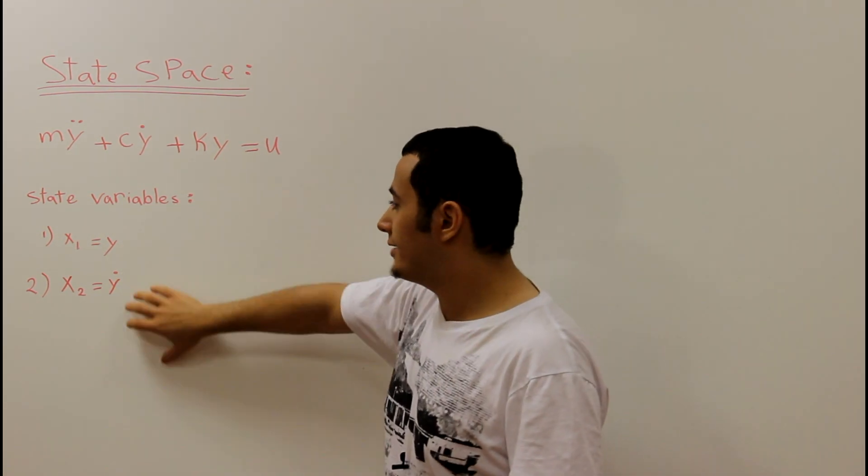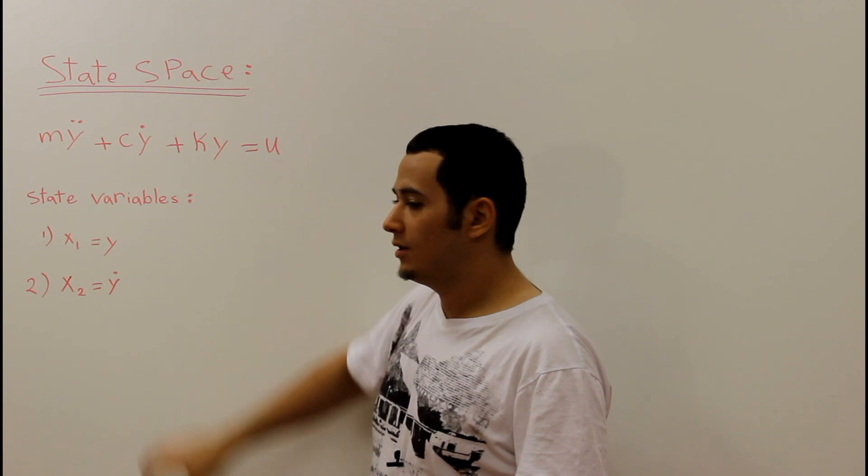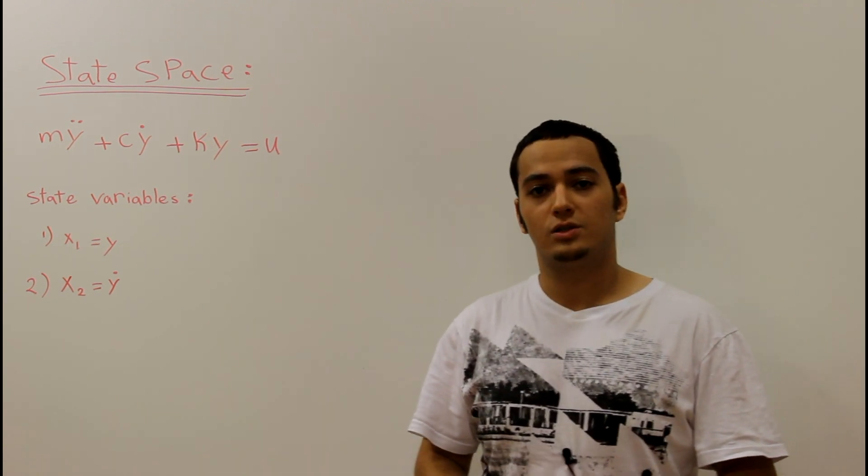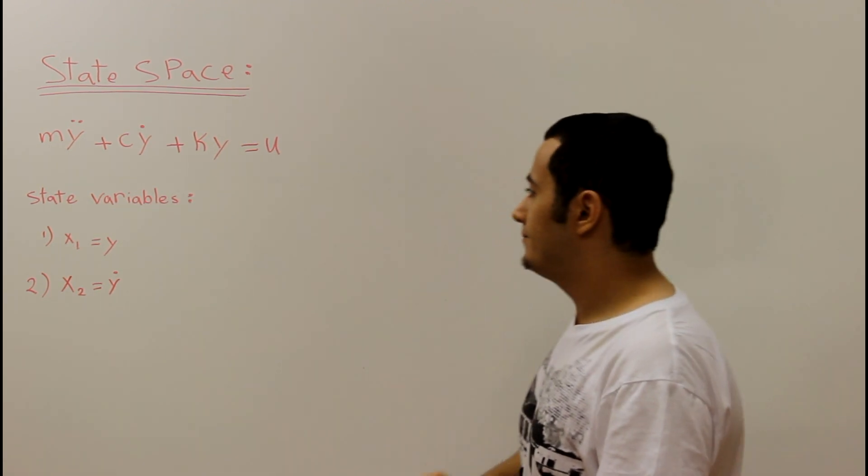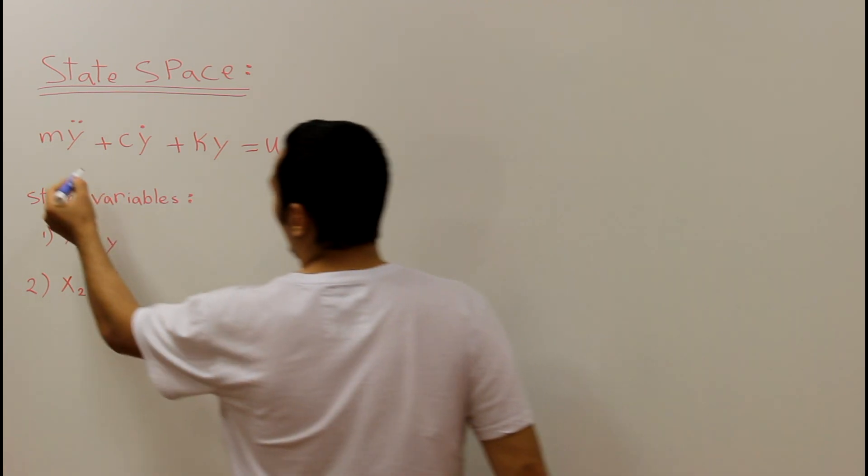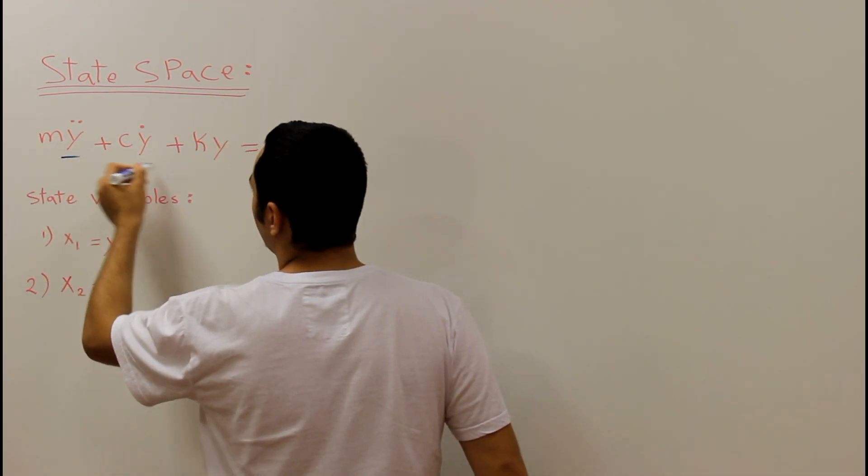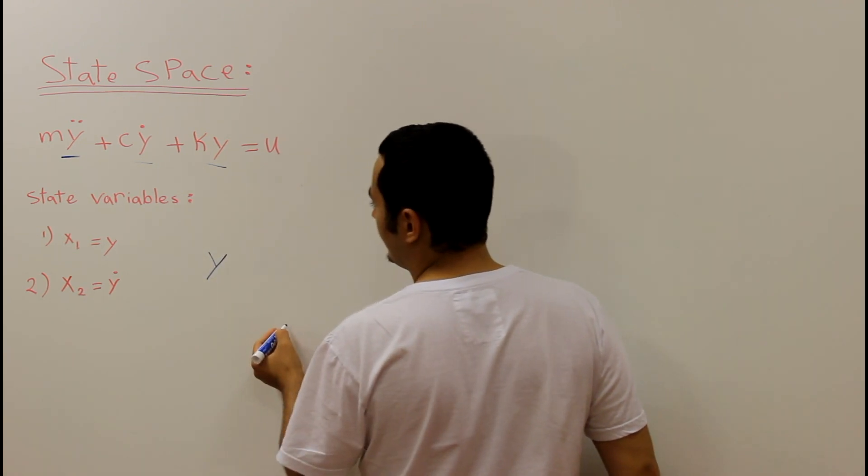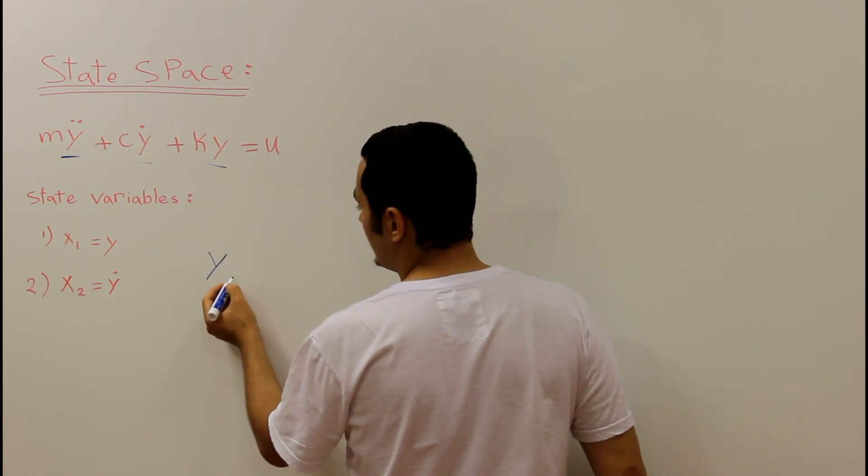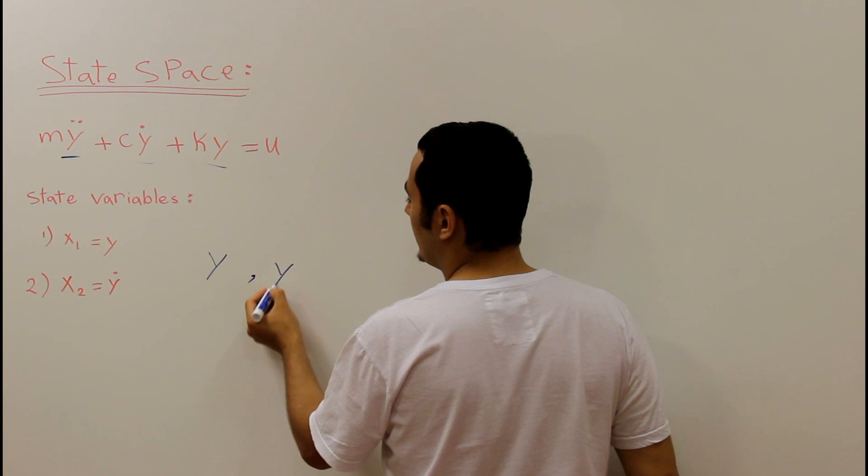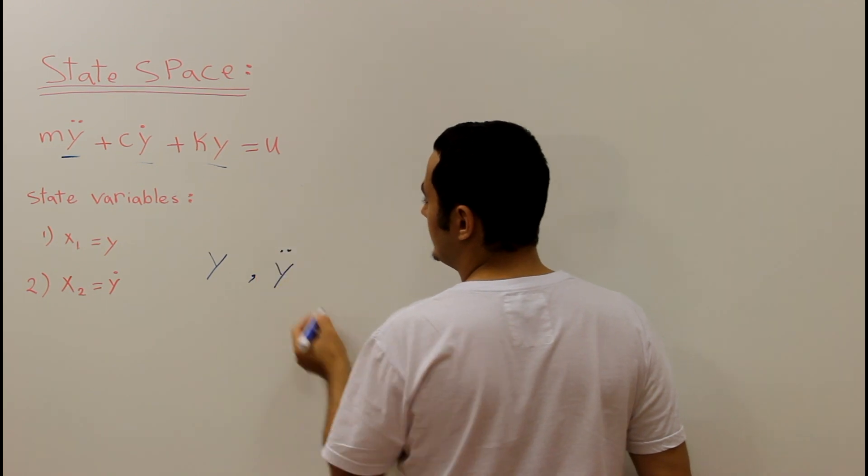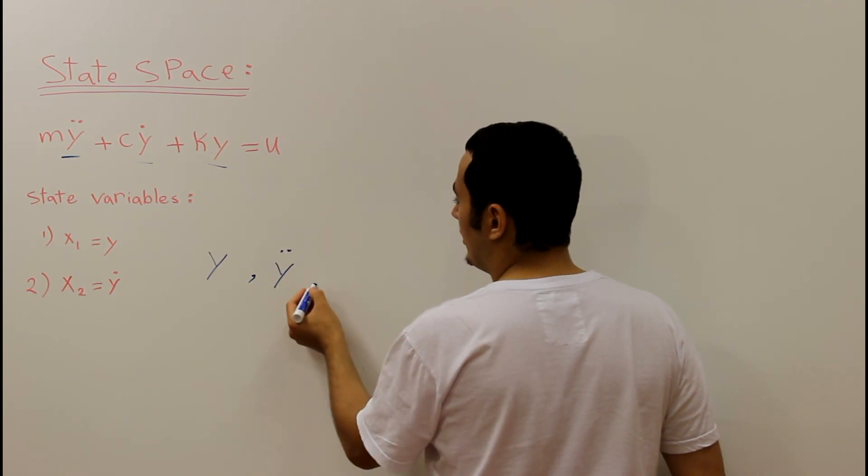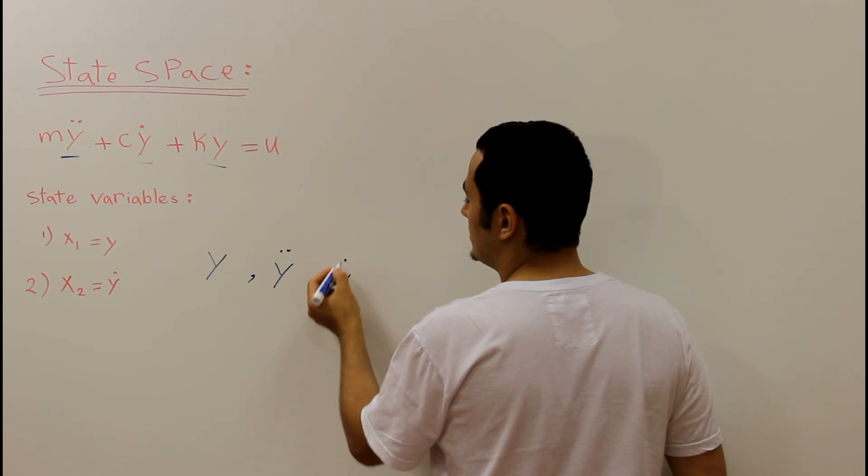the second one says x2 equal y dot. The first thing I would like to explain is the difference between y double dot, y dot and y. y is the displacement, y double dot is the acceleration and y dot is the velocity.